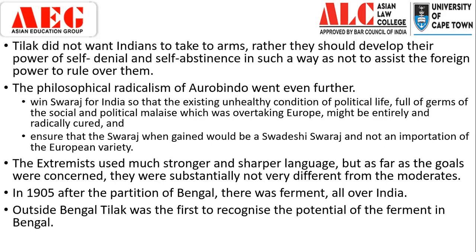For Tilak, self-rule was within the set bureaucracy — Indians would be the ones governing every domain of their lifestyle. While for Aurobindo, it would be a new system set in place. The extremists used much stronger and sharper language, but as far as the goals were concerned, they were substantially not very different from the moderates. The ultimate goal was the same — even the moderates had demanded Swaraj and so did the extremists. It was only the language, the emotions, and the audience to which they were catering that was different.